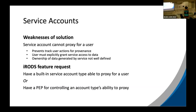Some weaknesses with the solution: the big one is that a service account can't proxy for a user. Sometimes it's nice to be able to do that because if they can proxy for a user, you can track user actions for provenance purposes. Also, users must explicitly grant the service access, which may be extra security but can be limiting. And the ownership of data generated through the service is not well-defined. A feature request for the iRODS team would be a built-in service account type able to proxy for a user, or the ability to control whether an account type has the ability to proxy.